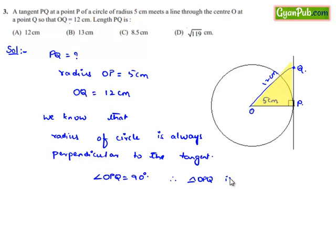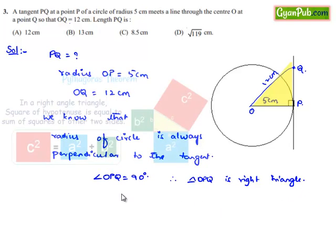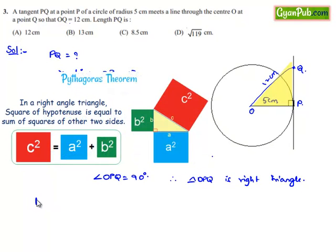Therefore, triangle OPQ is a right angle triangle. In the right angle triangle, by Pythagoras theorem, we can say: